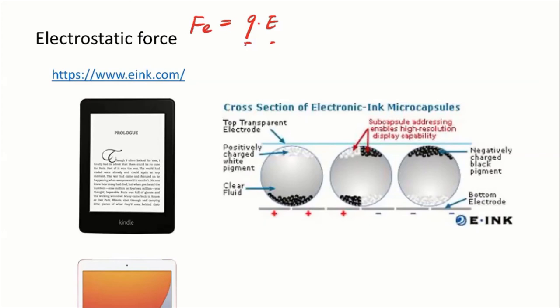If the particle carries certain charges and we put it into an electric field, we can move it away. This is the idea behind removing particles in an ESP — we bring electrons to the particles and expose them under a certain electric field. Because of that field, particles move and get attached onto surfaces. A typical electrostatic precipitator can achieve almost or higher than 95% particle removal efficiency.